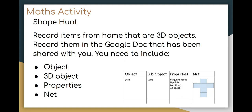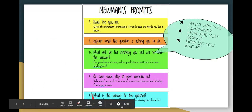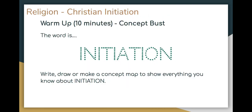Going on a shape or object hunt — your Newman's prompts are there to help you. You need to read the question, explain what it's asking you to do, think about what strategies you might use, go over each step in your working out, and then think about what the answer to the question might be.